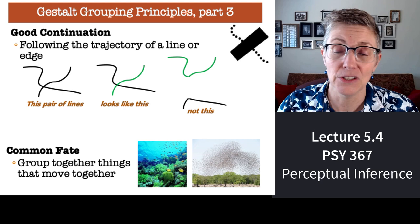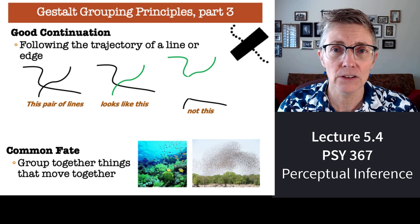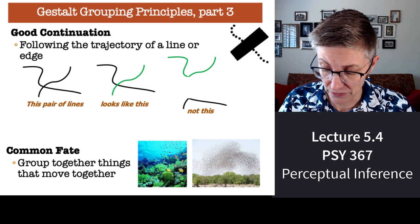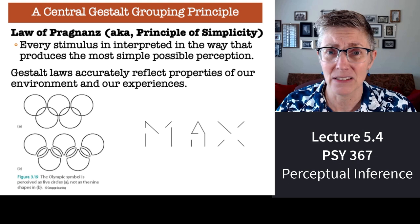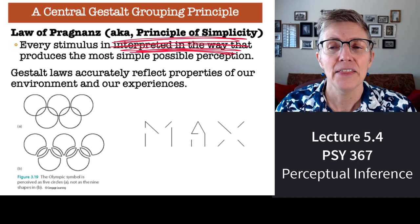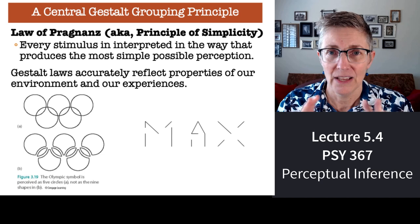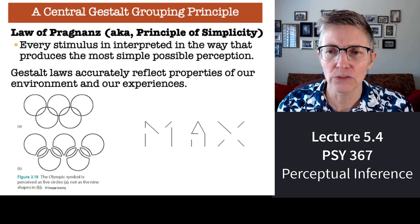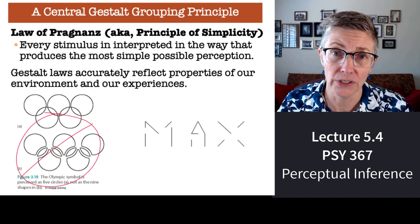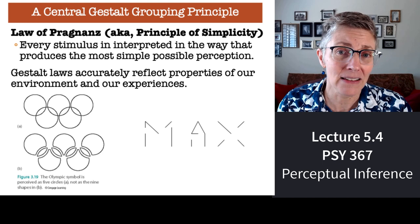Another Gestaltist principle is common fate: if things move together, they group together. For example, we see a school of fish because the fish move in the same direction. The central idea for Gestaltists was a rule called simplicity — or in German, something like the law of Prägnanz — that we interpret everything in the simplest way possible. The problem is that 'simple' is hard to define precisely. But the idea is that if we see the Olympic rings, we interpret them as five rings, not as the complicated overlapping shape they could be. Similarly, we interpret a certain stimulus as the word 'max' — Gestaltists would argue that's the simplest interpretation.